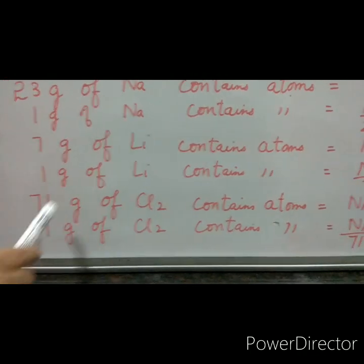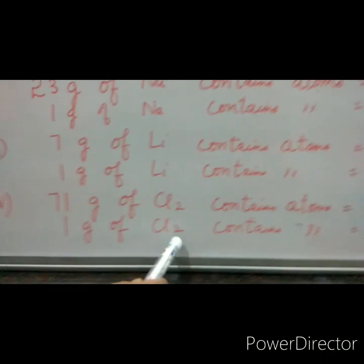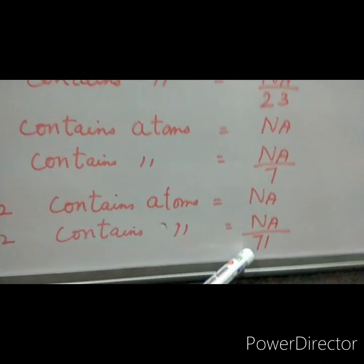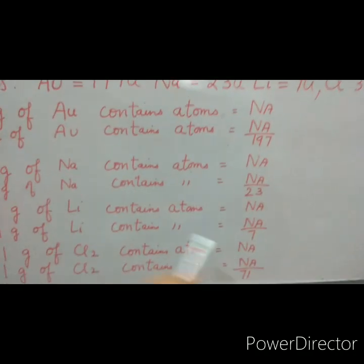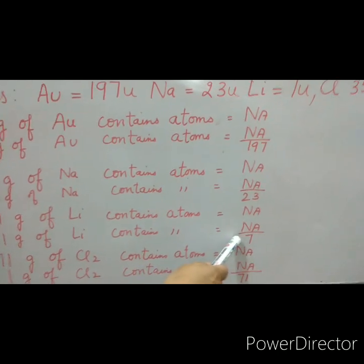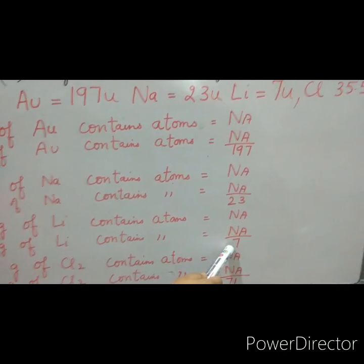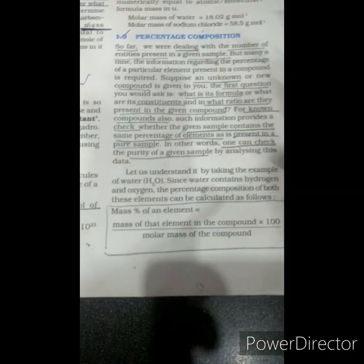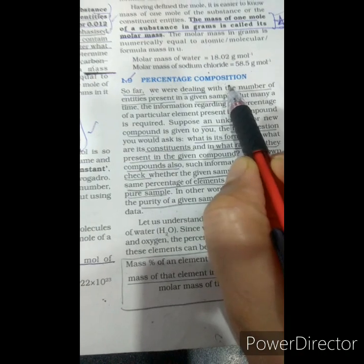For chlorine, 71 grams will contain atoms equal to Avogadro's number, so 1 gram of chlorine will contain Avogadro/71. From mathematics, it is easy to predict that lithium is going to have the maximum number of atoms because the denominator is the lowest. So the answer is lithium.